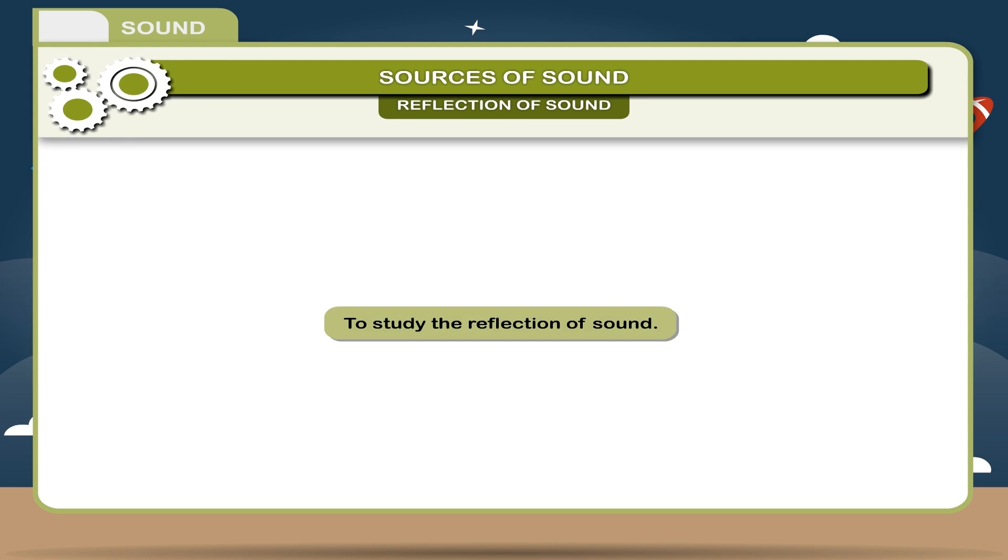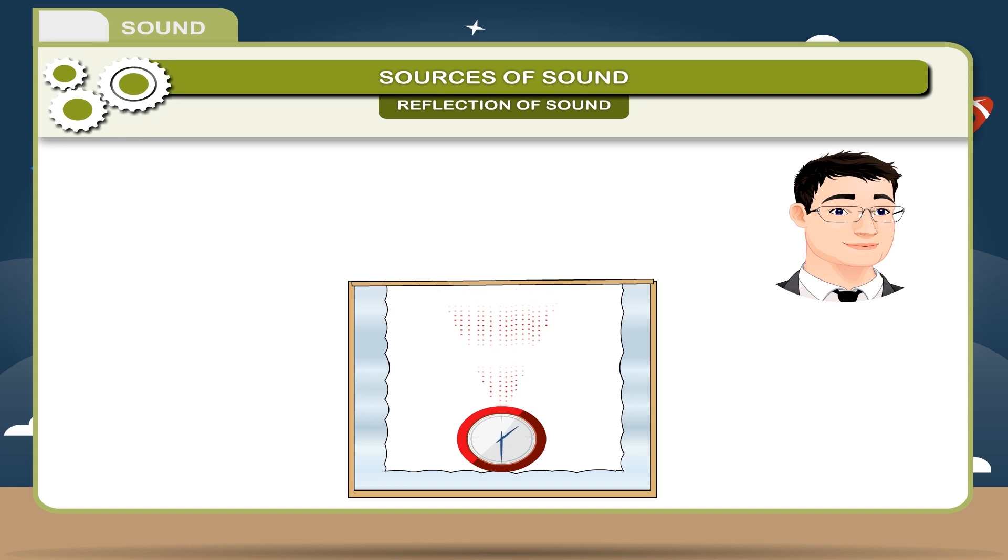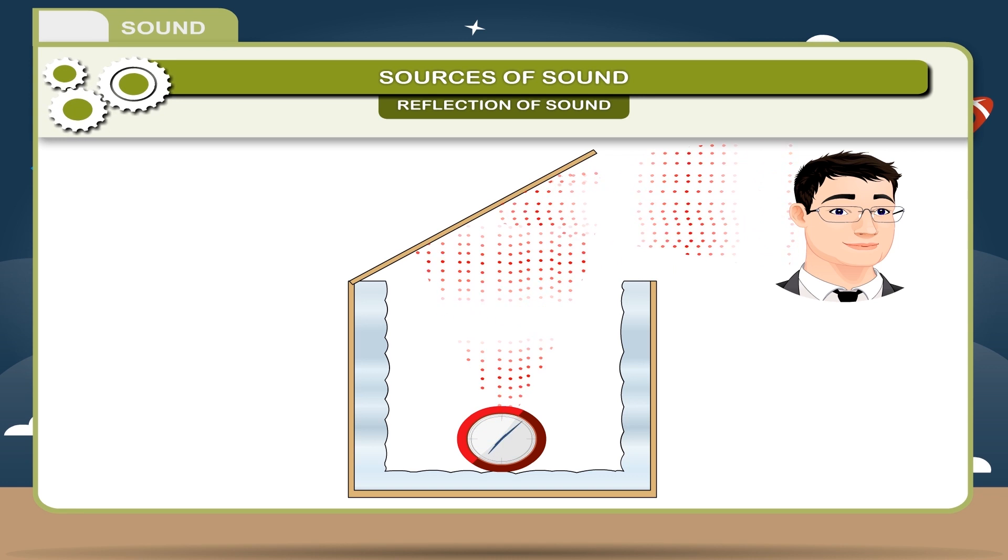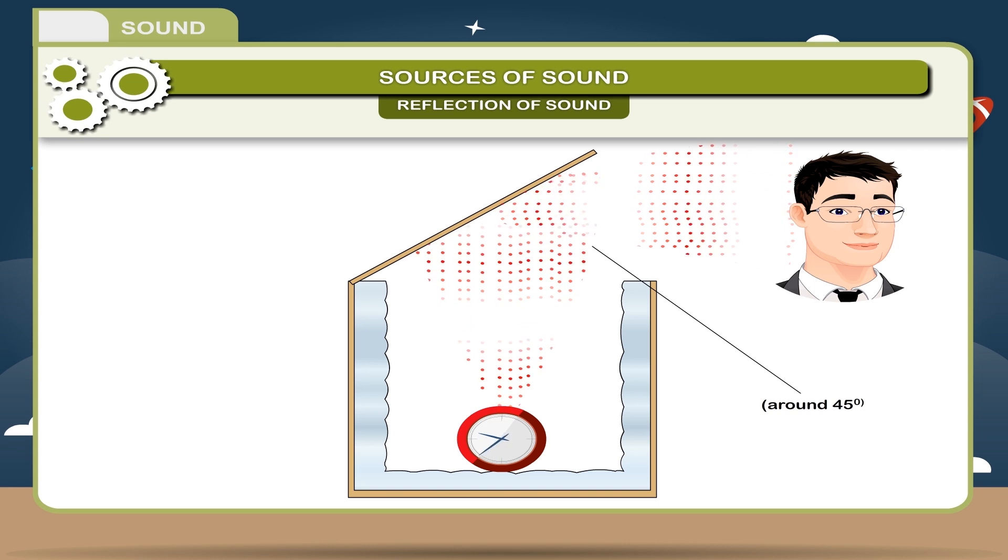Activity. To study the reflection of sound, take a glass container with a wooden lid and put a clock inside it. You can hear the sound of the clock. Now, gradually open the lid of the container. When the lid is at a certain angle, around 45 degrees, the sound heard by the observer is more.